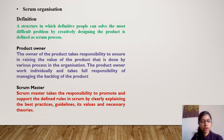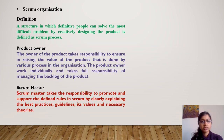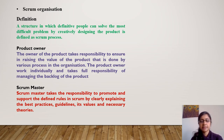Last but not least is scrum organization. Scrum organization is a structure of defined people who can solve the most difficult problems faced in product design. There are different roles in scrum organization. I have defined two important roles: product owner and scrum master. The product owner is responsible for creating the value of the product through various processes in the organization. The scrum master takes responsibility to promote and support the defined roles in scrum by clearly explaining best practices, guidelines, values, and necessary theories.